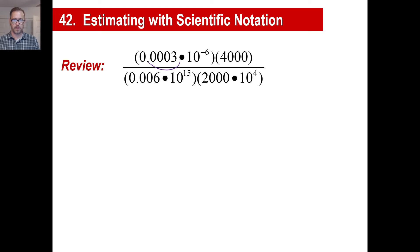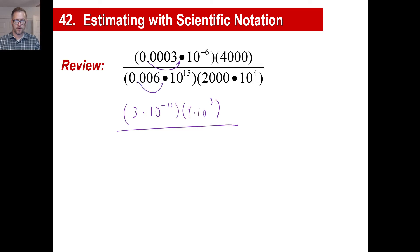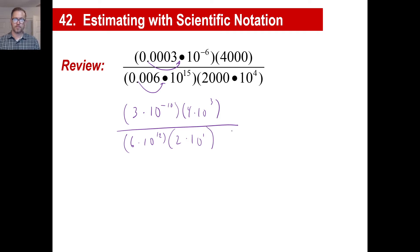So let's start here. We've got 1, 2, 3, 4 over. That'll give us 3 times 10 to the negative 10 power. And then 4,000 is 4 times 10 to the third power. This one is 3 over, which means 6 times 10 to the 12th power. And then we have 2 times 10 to the 7th power.